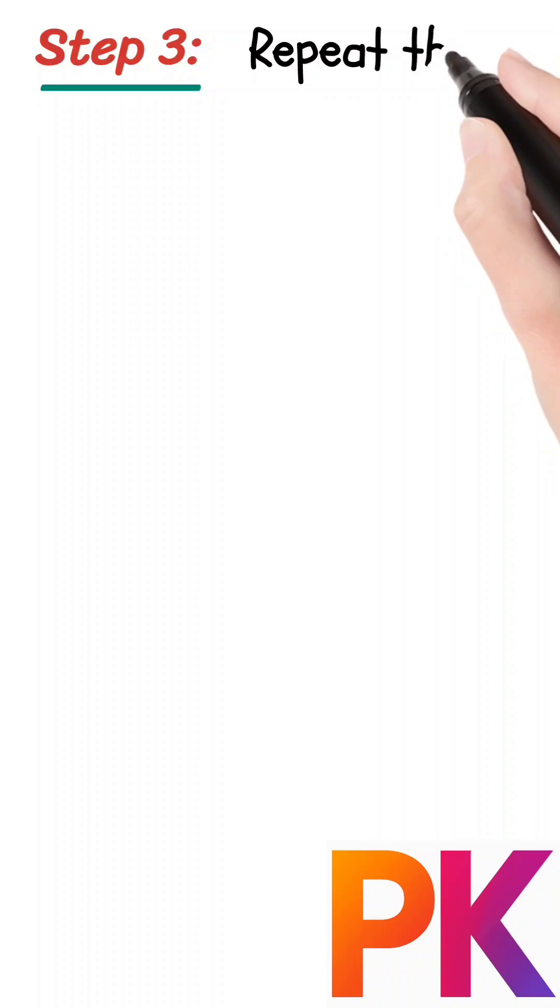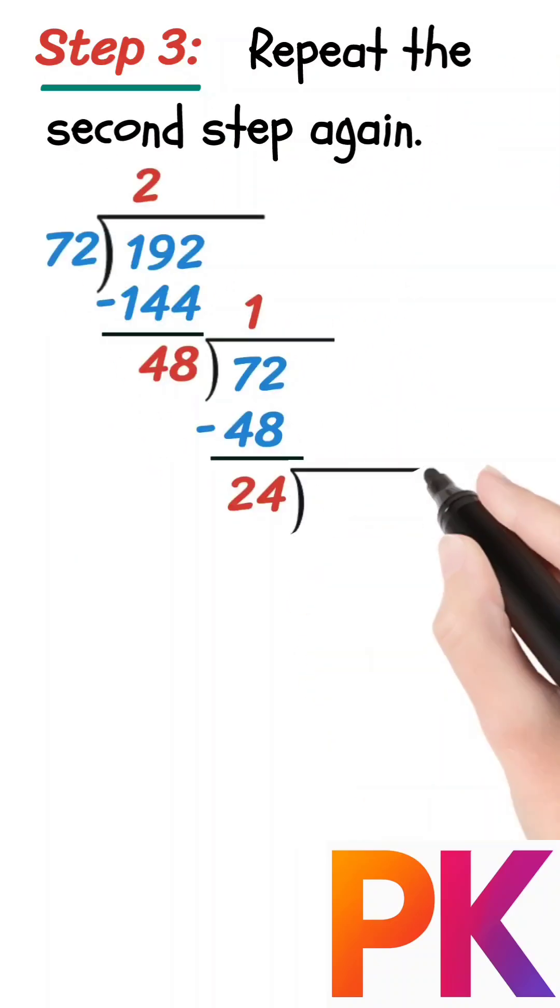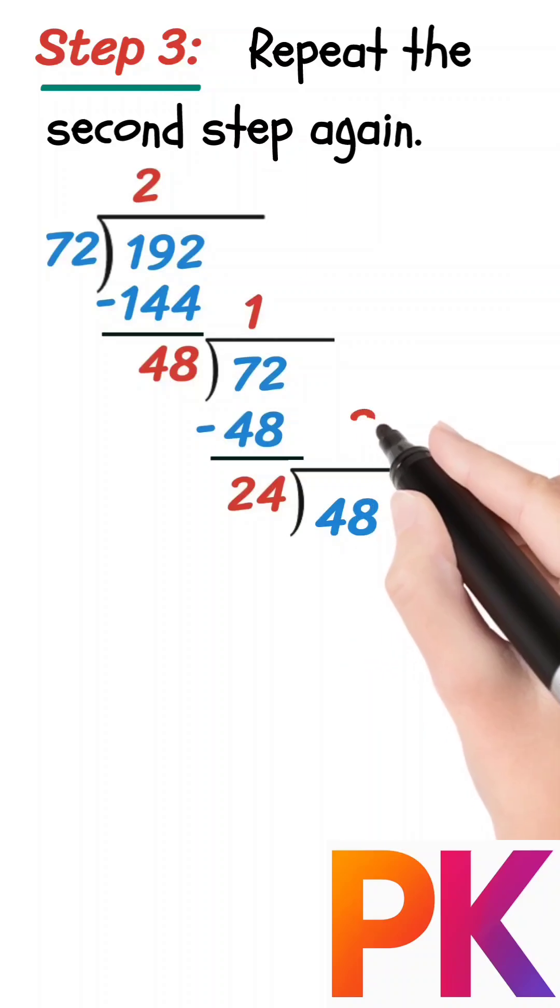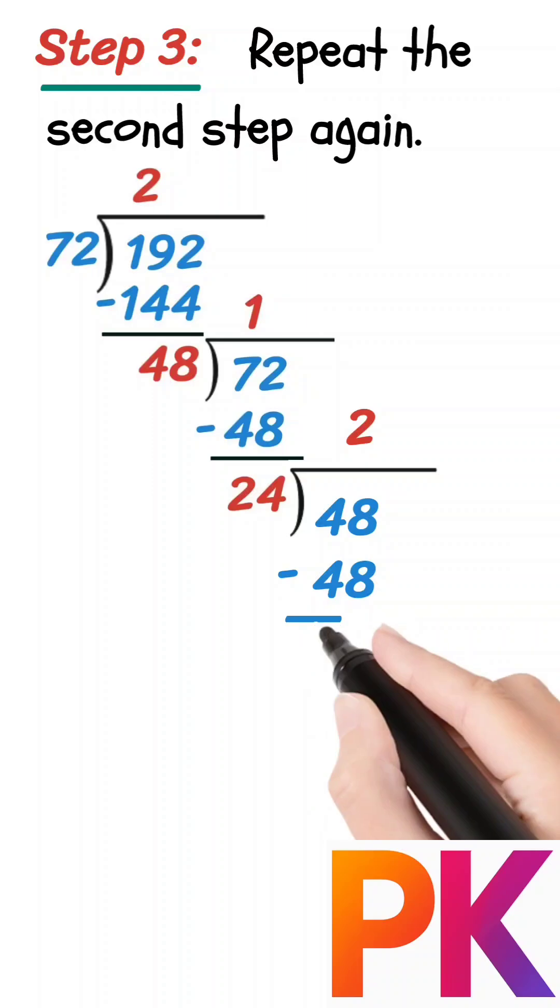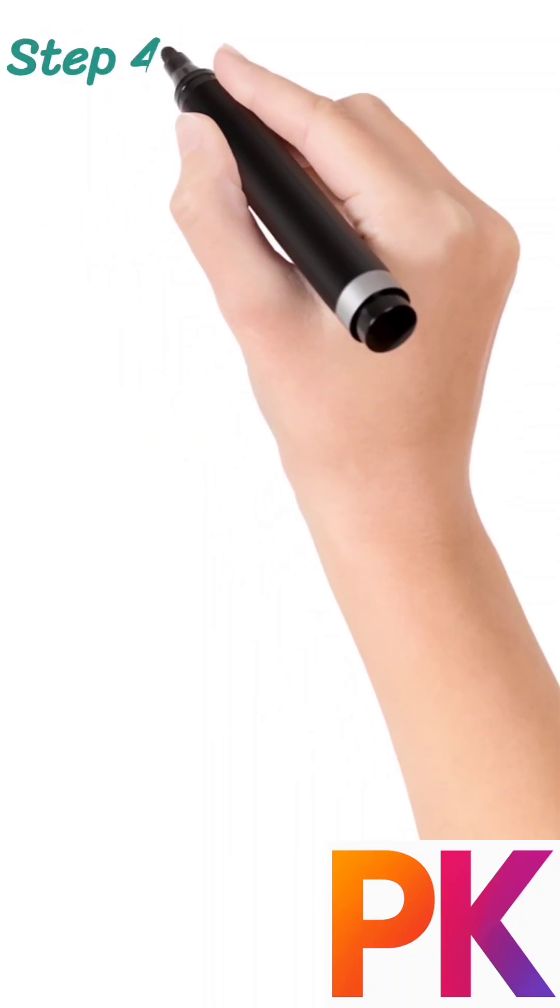Step 3: Repeat the second step again. Now 24 becomes the new divisor and 48 the new dividend. 24 times 2 is 48, and on subtracting we get 0 as the remainder. Step 4: